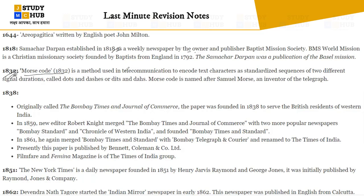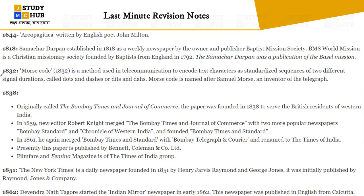In 1832, the Morse code method was used in telecommunication to encode text characters as standardized sequences of two different signal durations — called dots and dashes. Morse code is named after Samuel Morse, the inventor of the telegraph. It is a method used in telecommunications to encode text characters.